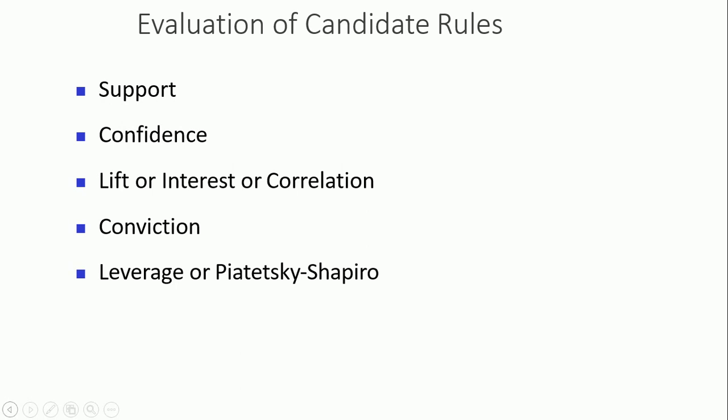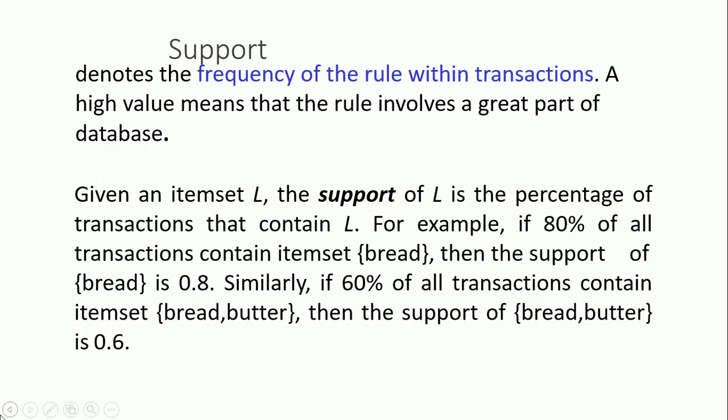Starting with support — support denotes the frequency of the rule within the transactions. A high value means that the rule involves a greater part of the database. If something is appearing again and again, that means the frequency is high — for example, butter with milk appearing repeatedly. We count that frequency and that is called support.